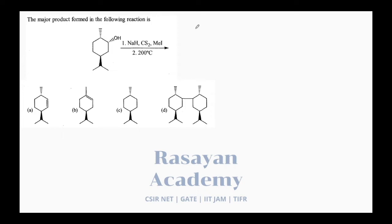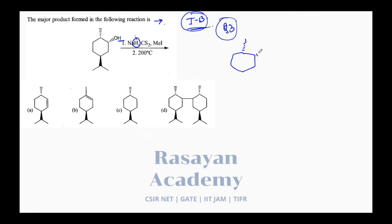Another reaction from the same year, June 2013 only. The major product formed in the following reaction is asked — stop the video and identify it by yourself first. Sodium hydride is going to remove the proton here, giving you an O-minus molecule. Does it look like xanthate ester formation? It absolutely is — this is xanthate ester formation.